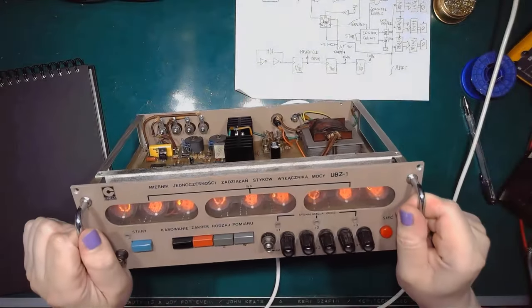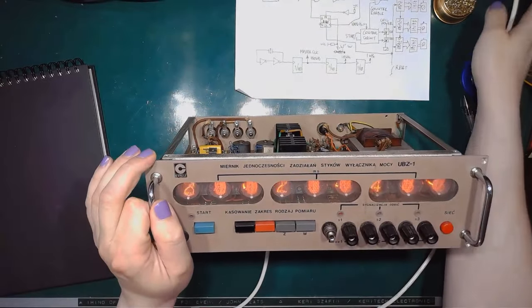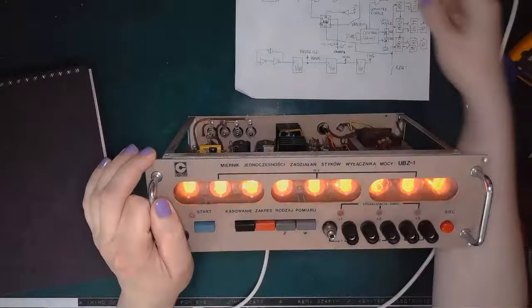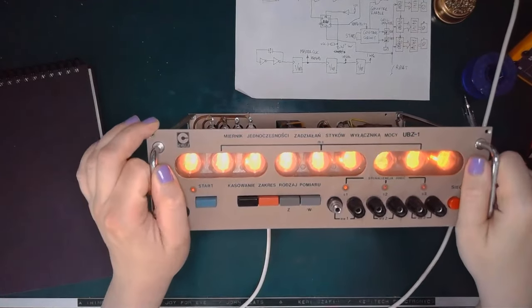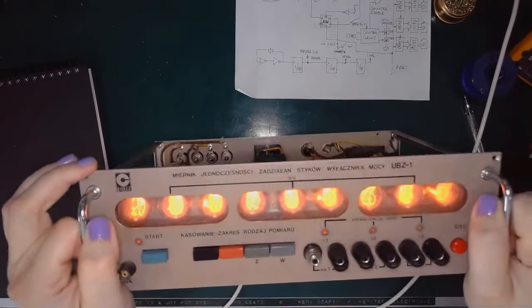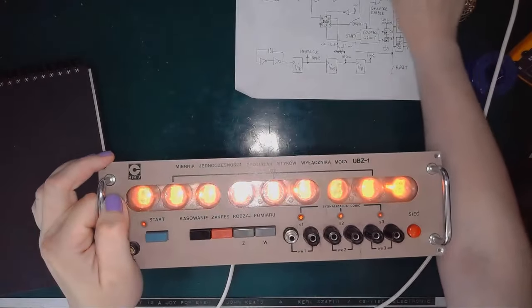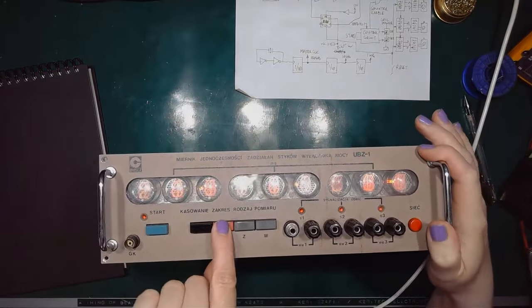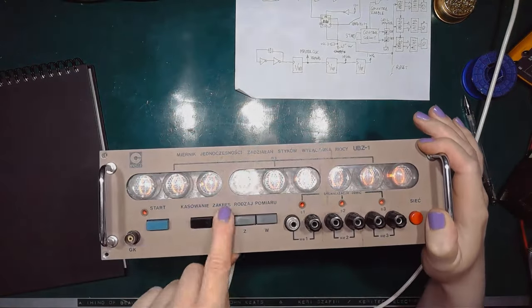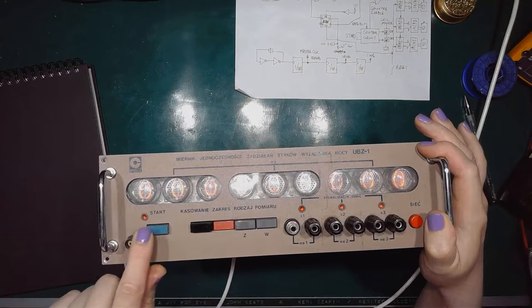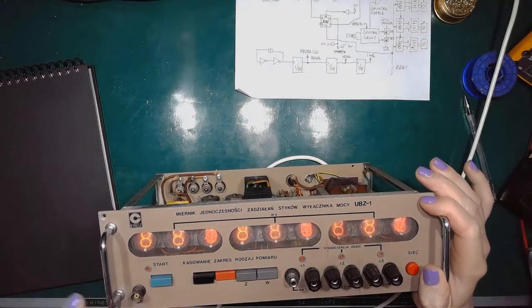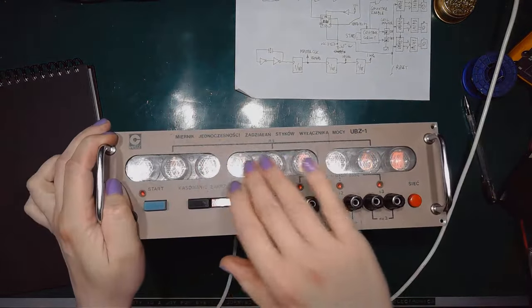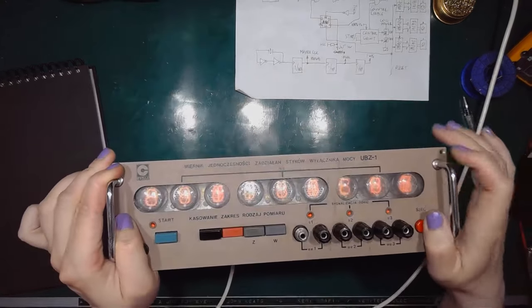And the Nixie tubes are counting like crazy. What light can give you a better view. Of course, now they are reset, but change the range. Now they count slower at 1kHz.